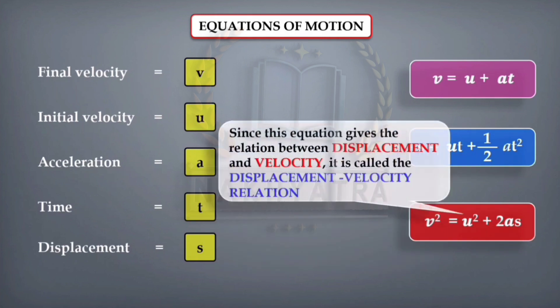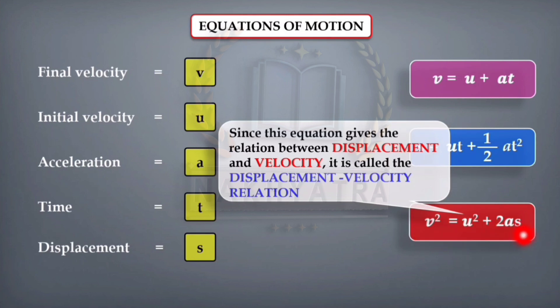The third equation is called the displacement-velocity relation, because here velocity is present and displacement is also present. So this equation gives the relation between displacement and velocity.